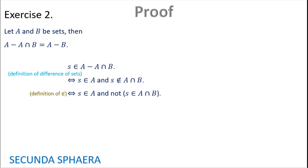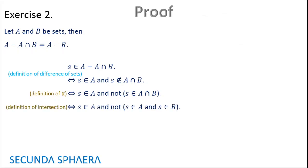And now for the definition of not-in, that's the negation of belonging. So s is in A and not (s in A intersection B). Now using the definition of intersection, it is if and only if s is in A and not (s in A and s in B).